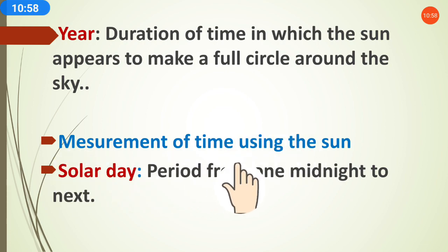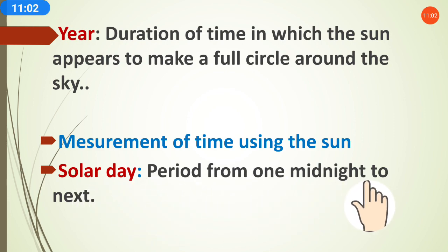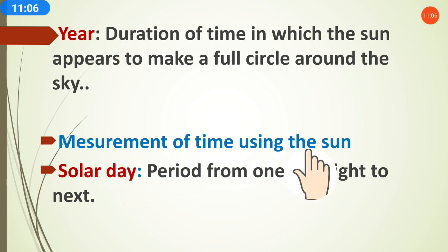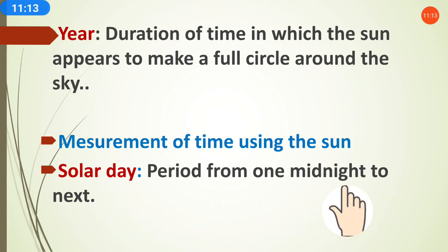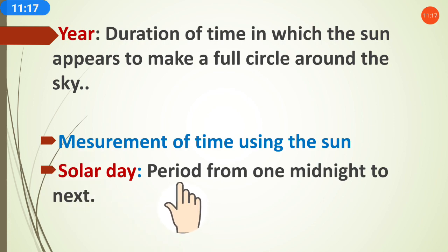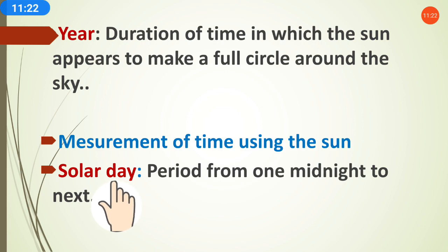Measurement of time using the sun — like the solar day. What is the definition of solar day? The period from one midnight to the next is called a solar day. A question could come: the period from one midnight to the next is called what? The answer is solar day.